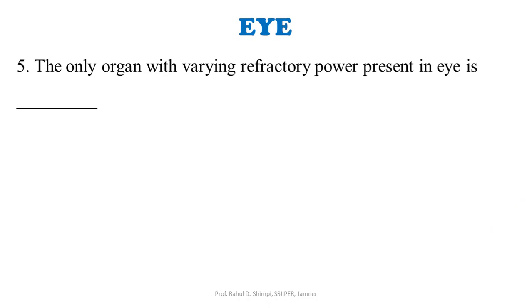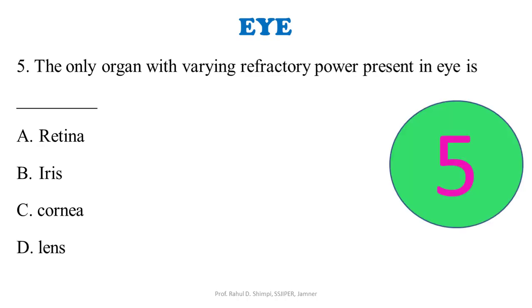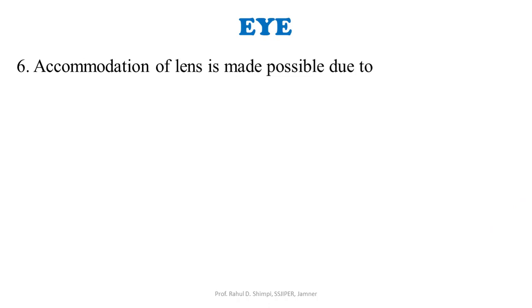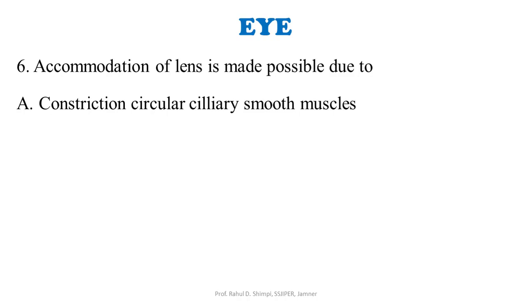The only organ with varying refractory power present in the eye is: A: retina. B: iris. C: cornea. D: lens. The correct answer is lens. The lens has the ability to change its thickness based on whether vision has to be set for nearer or distant objects, making it the only organ with varying refractory power.